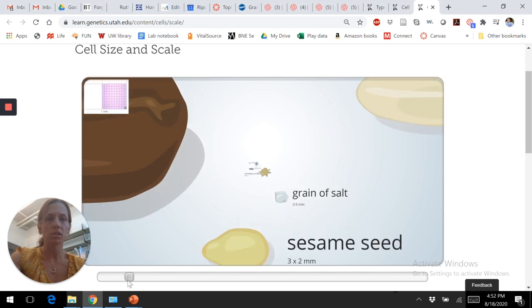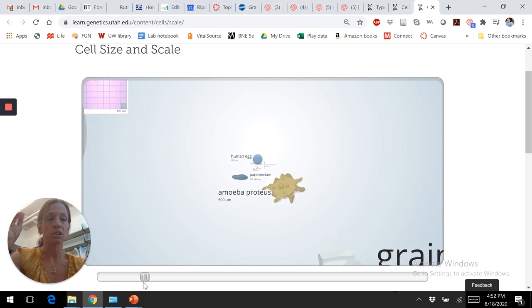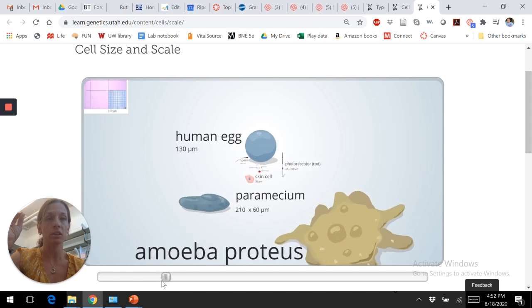we're going to go from what you can see by eye into things you can't see by eye. So, grain of salt is kind of, you know, you can barely see them, but you can. So, we're going in from there. We're getting into some single cell organisms. So, paramecium, a human egg is a single cell. It's a big cell.